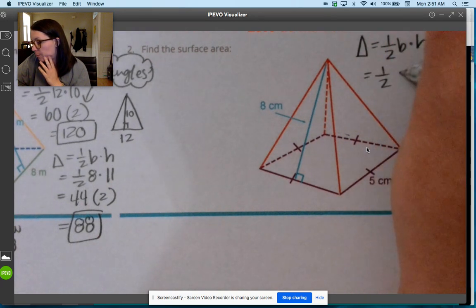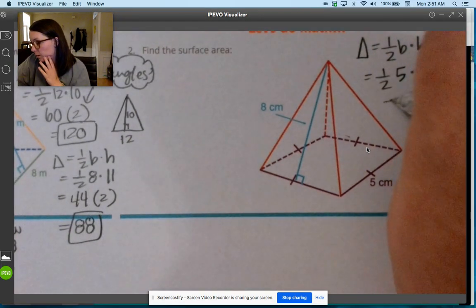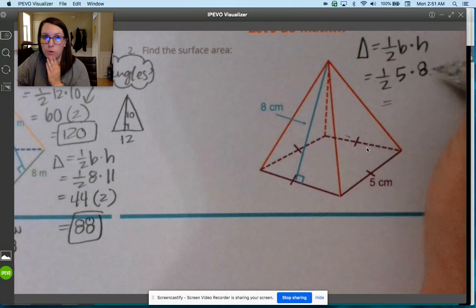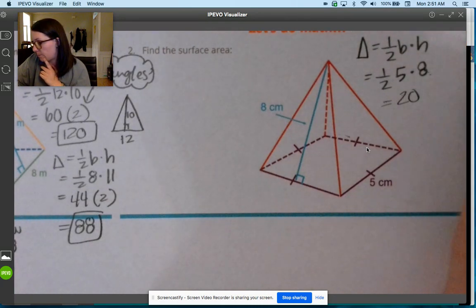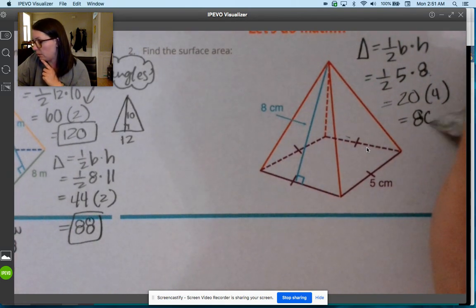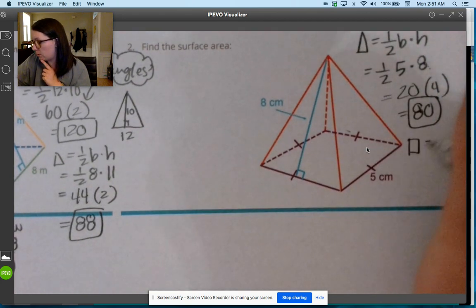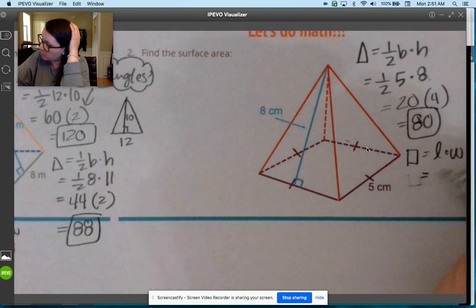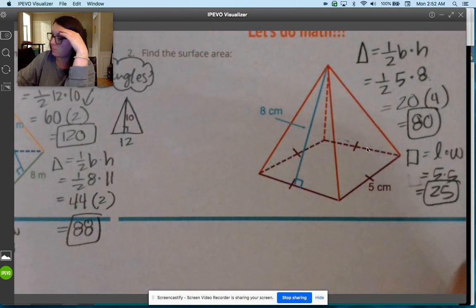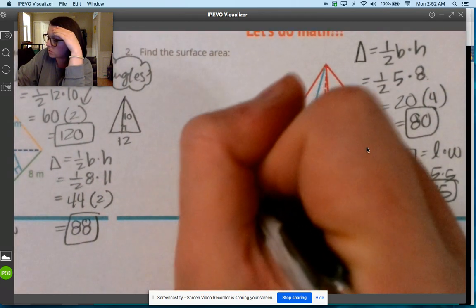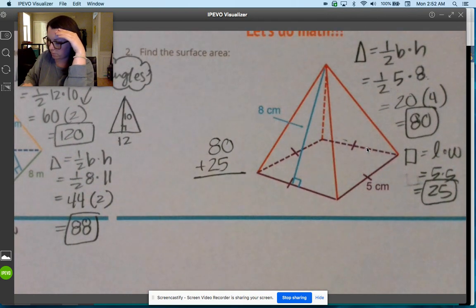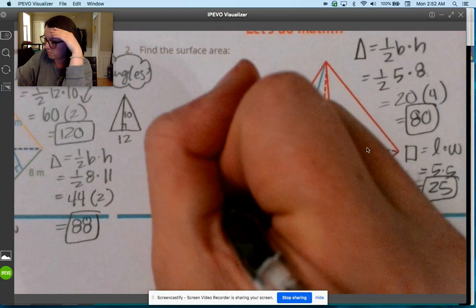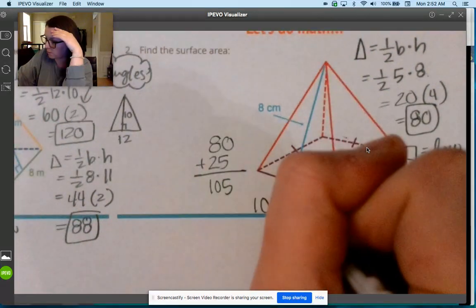If we do one half base, which is 5, times the height, which is 8, I'm gonna do one half times 8, which is 4, times 5, which is 20. There are four of these triangles, times 4 is 80. Then the rectangle, which is length times width, that's the bottom, which is 5 times 5, which is 25. We're just going to add them together: 80 plus 25 is 105 centimeters squared.